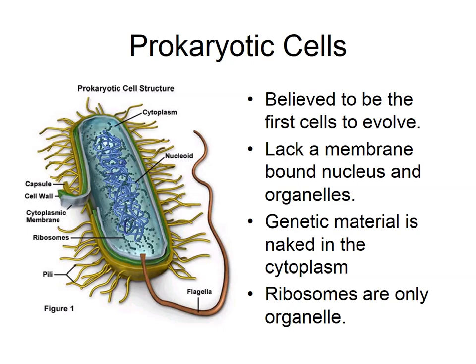Prokaryotes are believed to be the first cells to evolve — the beginning of life forms started as simple prokaryotic cells. They don't have membrane-bound organelles, and the genetic material is not enclosed within an envelope; it's naked in the cytoplasm. Ribosomes are the only organelles. The structure includes the capsule, cell wall, cytoplasmic membrane, cytoplasm with genetic material, ribosomes, and a flagellum for movement.